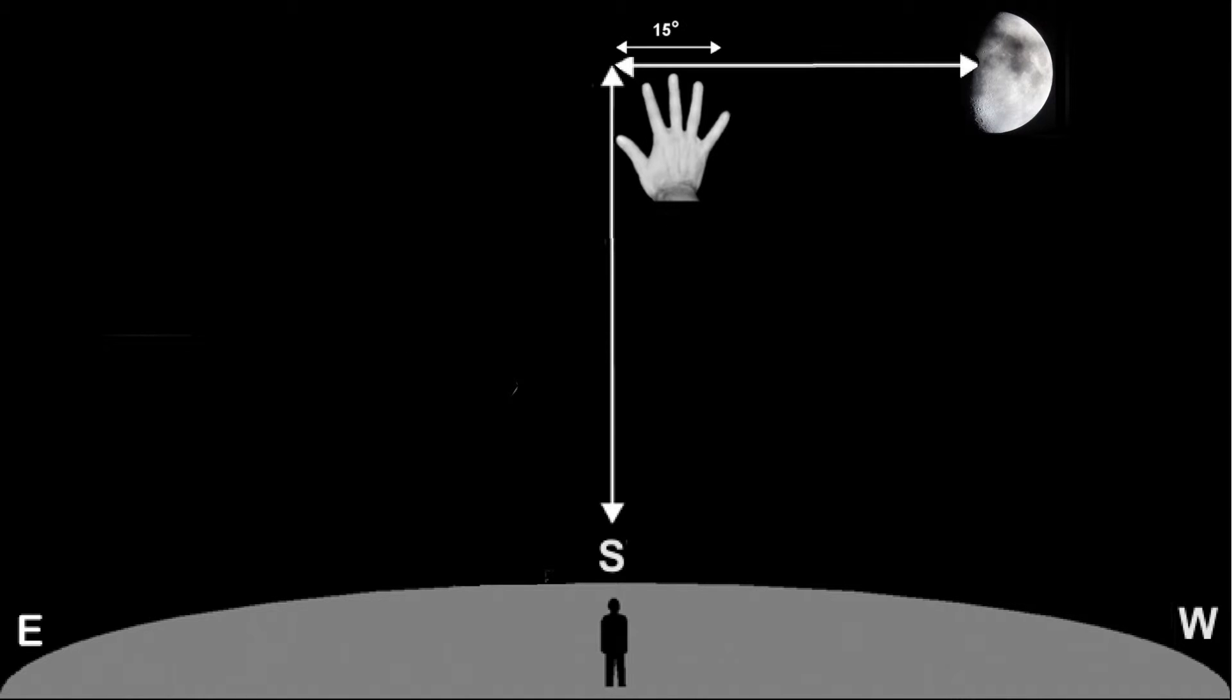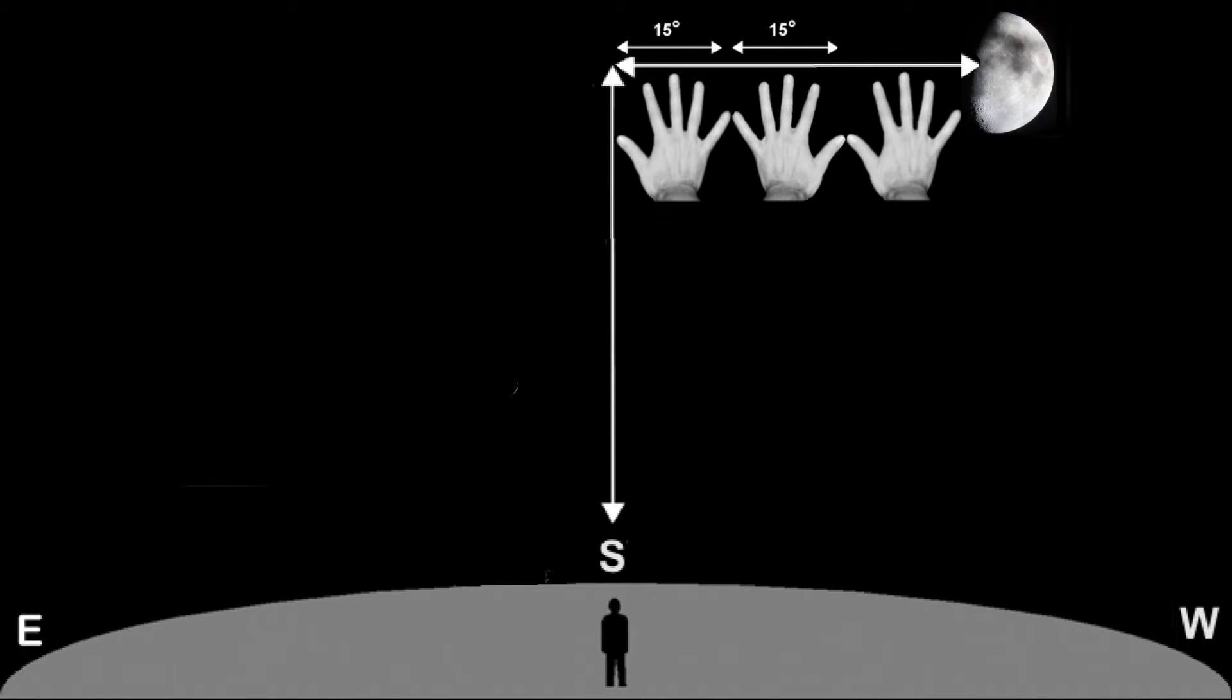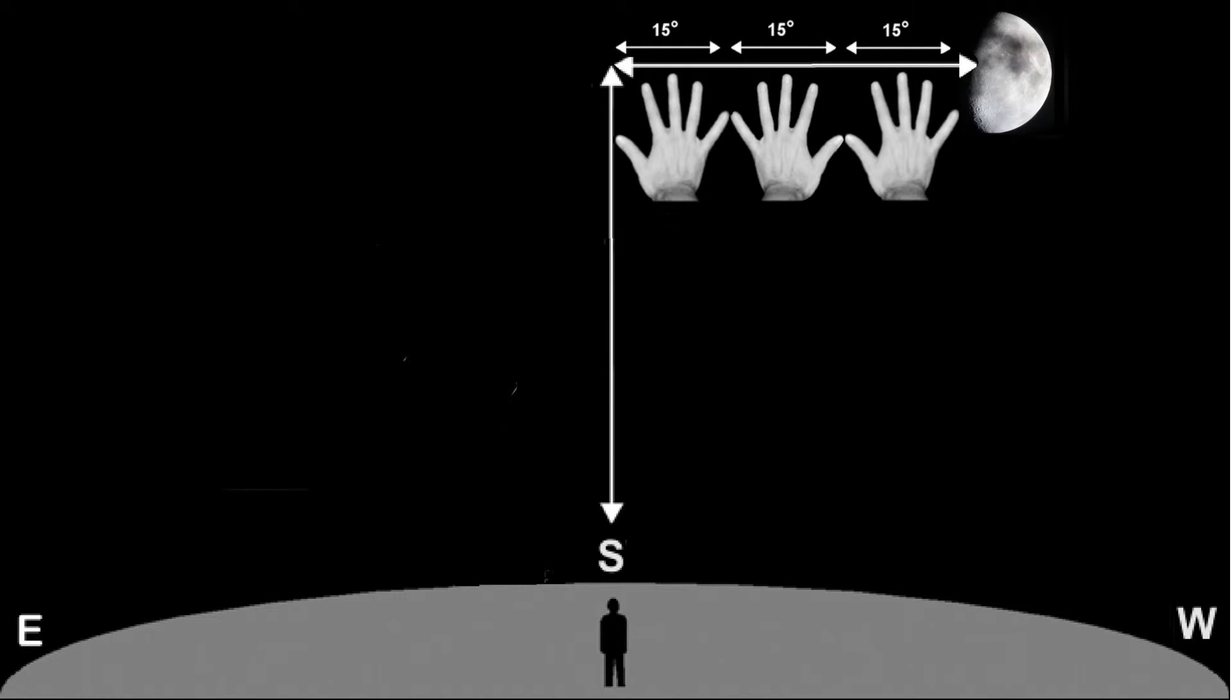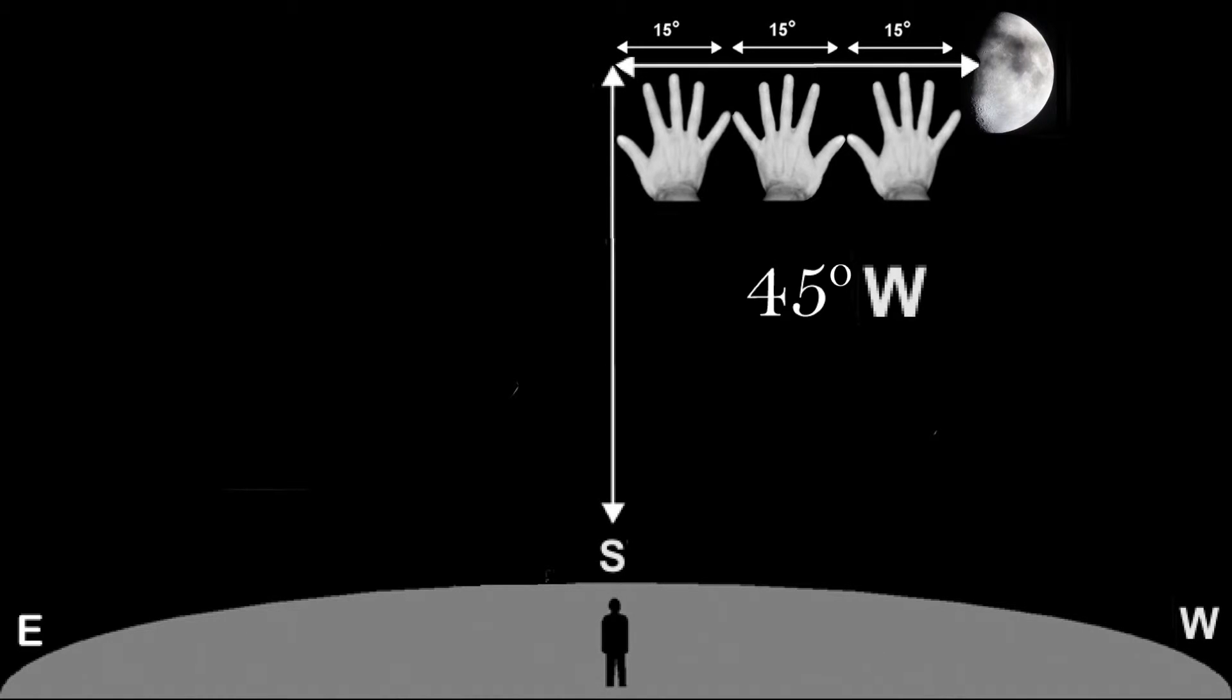Then take my right hand and put that next to that again until I reach the moon. In this particular case, I have three hand spans, so that is three segments of 15 degrees giving me 45 degrees, and I'm going to the west. So this is a 45 degree west measurement for my right ascension.